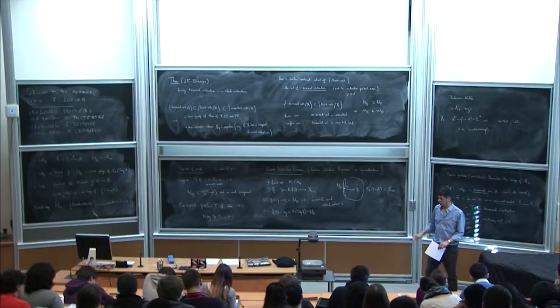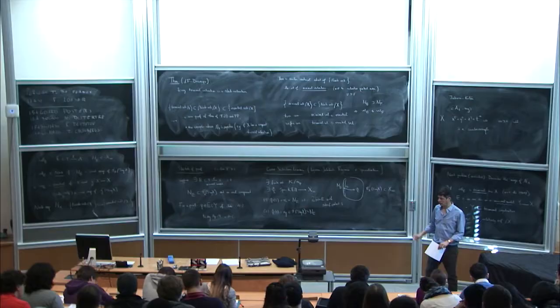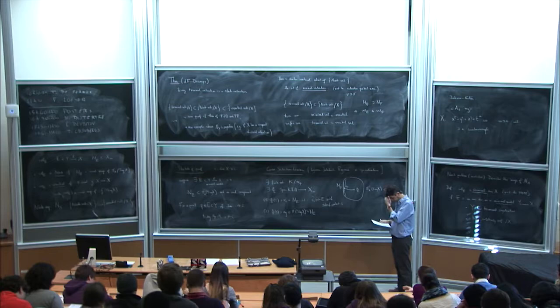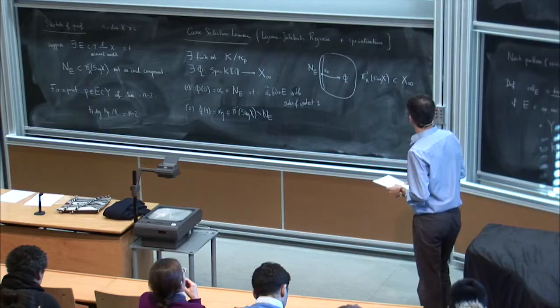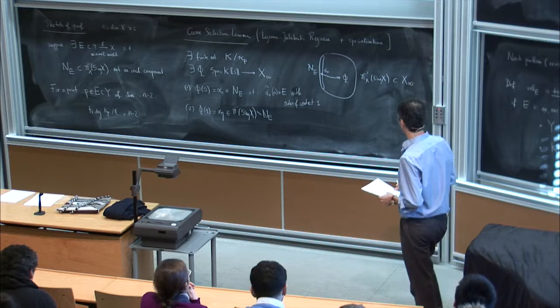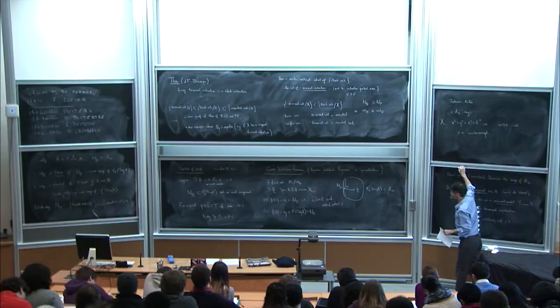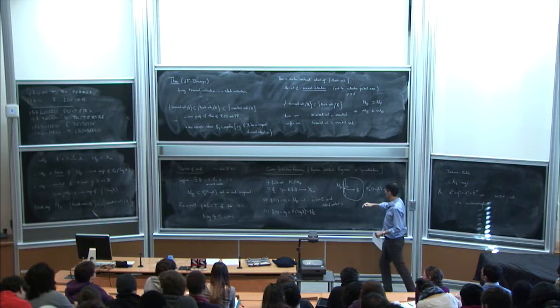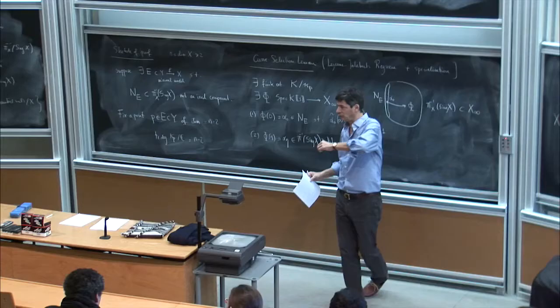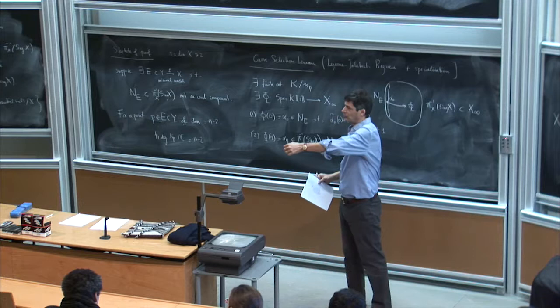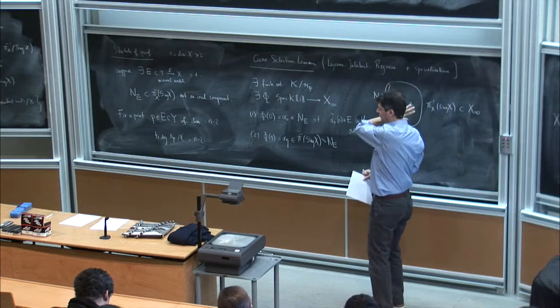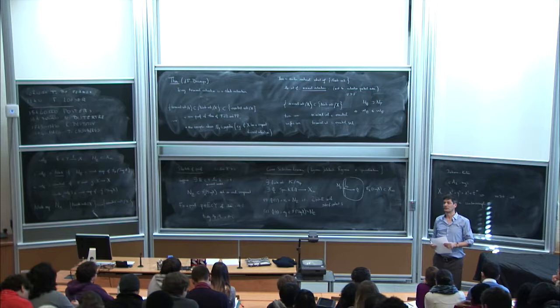There are two ways to think about this map φ. As an arc on an arc space, capital Φ is a one-parameter family of arcs, where S is the parameter of the family and T is the parameter of the arc. Alternatively, Φ can be described as a map from Spec K[[S,T]] down to X — a map from something that looks like a germ of a surface to X. The relation is given by Φ(S,T) = α_S(T).